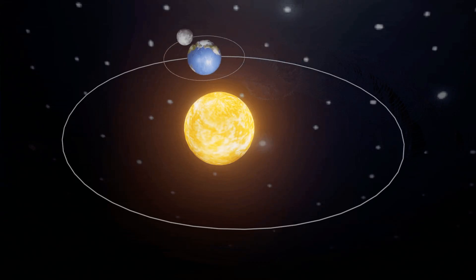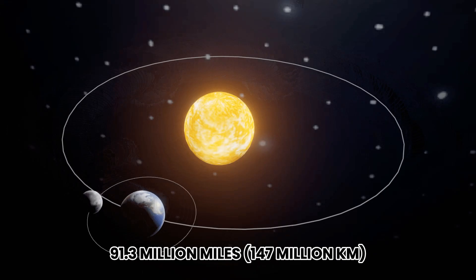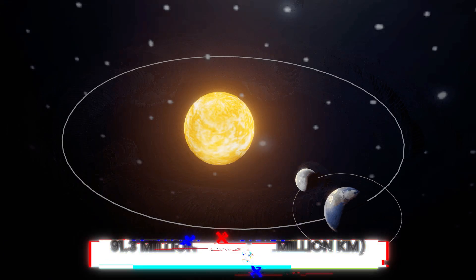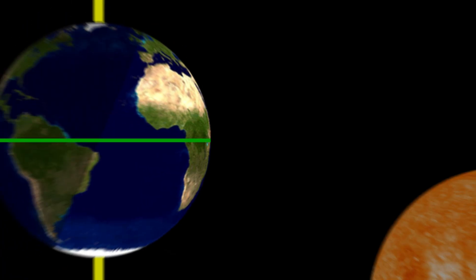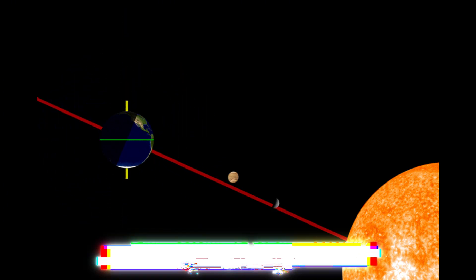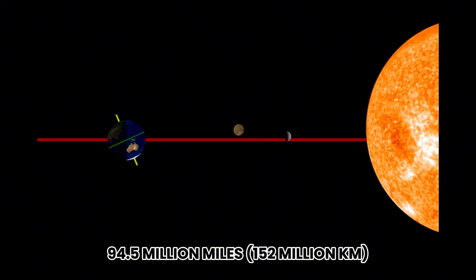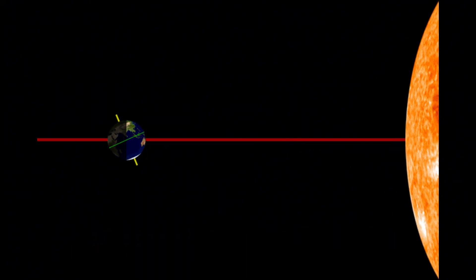about 91.3 million miles, 147 million kilometers, from the sun, around January 3rd, and aphelion, roughly 94.5 million miles, 152 million kilometers, near July 4.